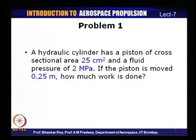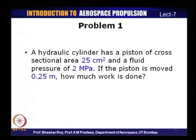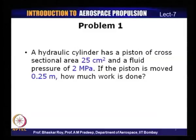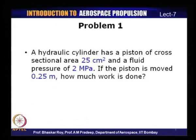Let us look at the first problem. We have a hydraulic cylinder with a piston of cross-sectional area of 25 centimeter square and a pressure of 2 mega pascals. If the piston is moved by 0.25 meters, how much work is done? We have a piston-cylinder arrangement where the area of the piston head and the pressure within the cylinder are given, and if the piston moves a specified distance, we need to find the work done.